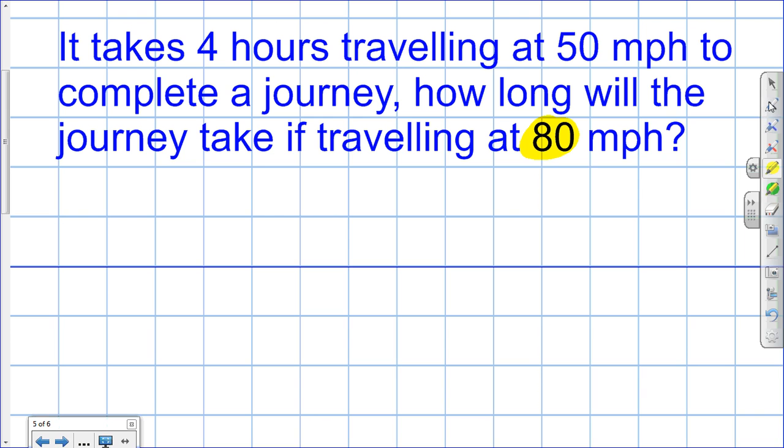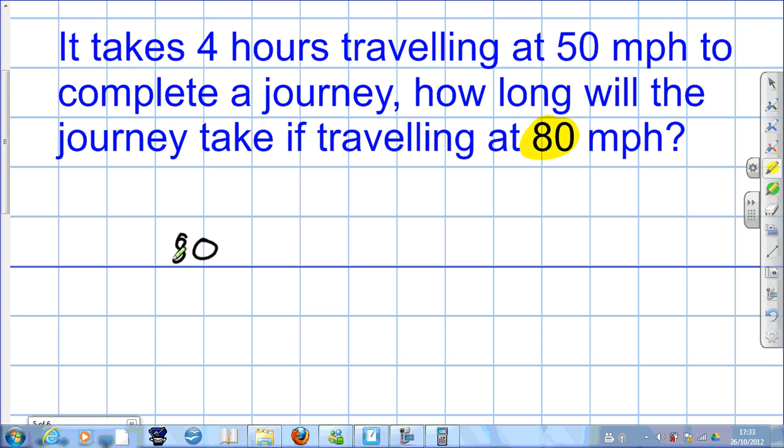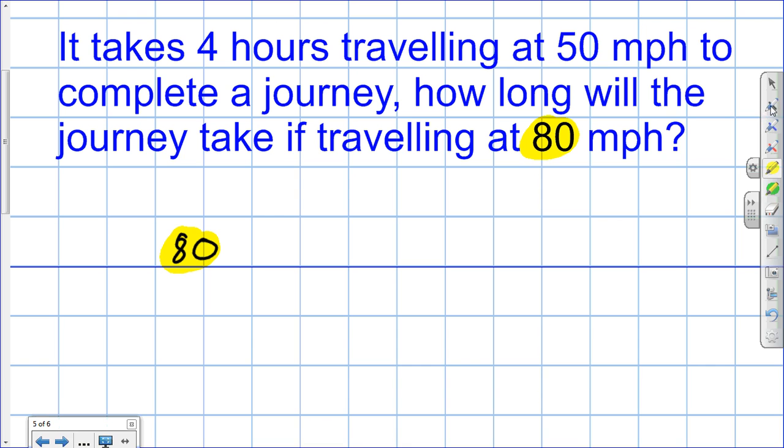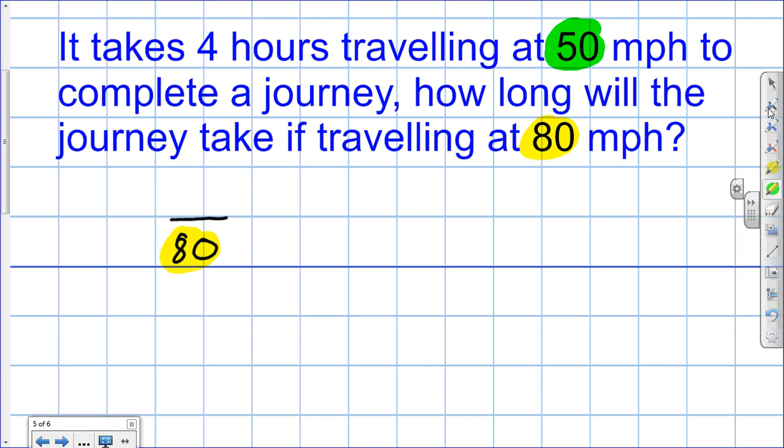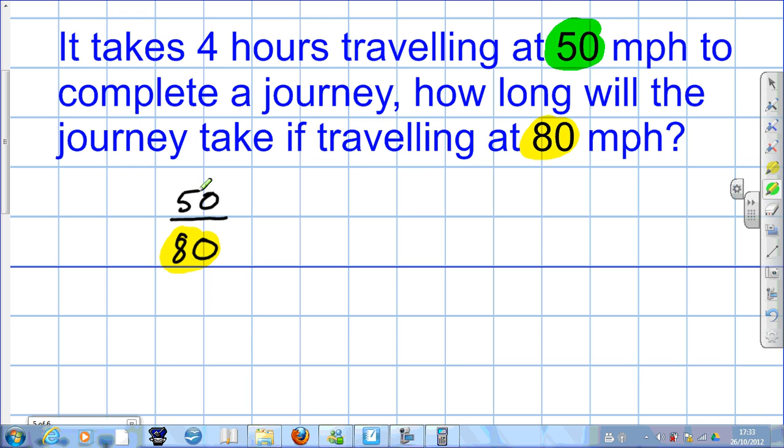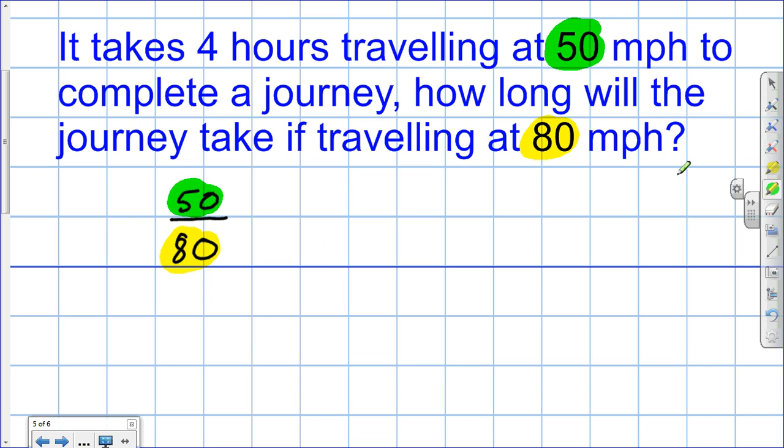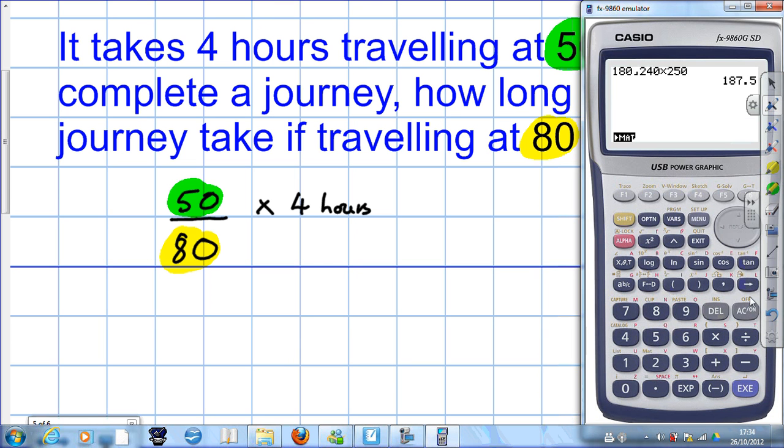Here's our first bit of information, 80. But this, instead of going on the top of the fraction, goes underneath. The second bit of information, the information with the same units, 50, goes on top. So they swap over in comparison with direct proportion problems. And then the rest is as before. You multiply it by the third number. So let's get the calculator to do everything here. So that's 50 over 80 times 4.